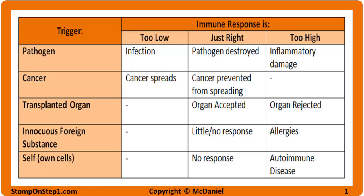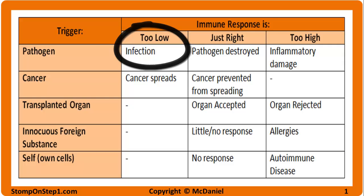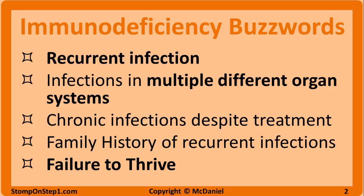Keeping with the theme from the rest of the chapter, a majority of the material from inflammation and immunology covers diseases that result when the immune system is too strong or not strong enough. In this video we are covering immunodeficiencies, which are when the immune response is too low and pathogens are allowed to infect the patient. The key word to watch for in question stems is recurrent infections — anybody can get an isolated infection, but frequent infections signal that the immune system is not functioning properly.